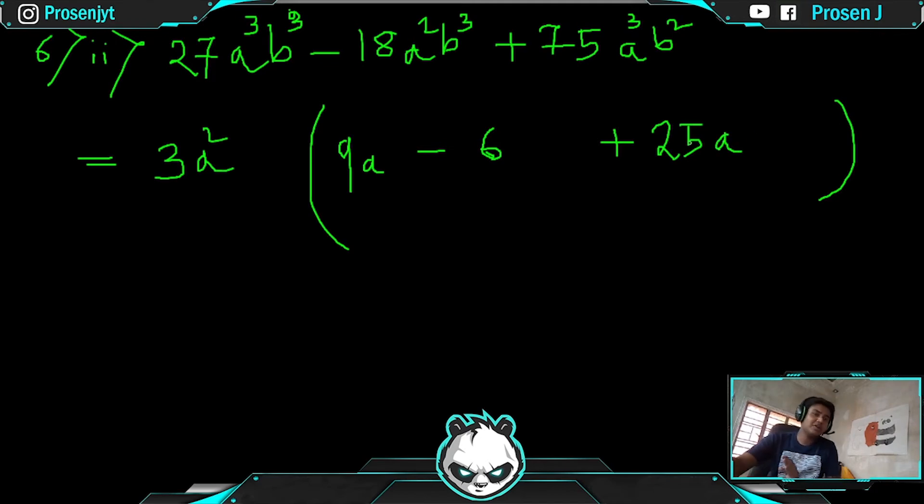Now coming to part b, where first and second have b³, last one has b². So we take out b². First one leaves b, second one leaves b, and third one has nothing left because b² was already taken. That's it, the sum is done.